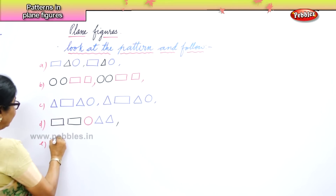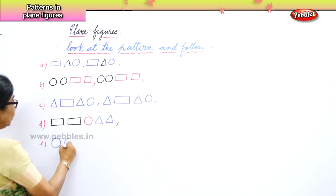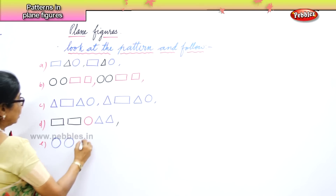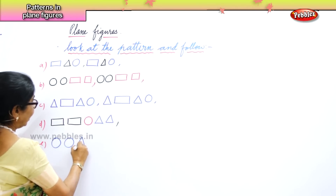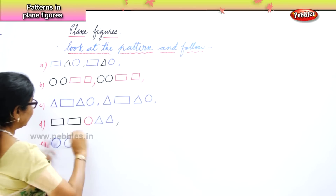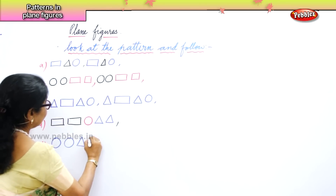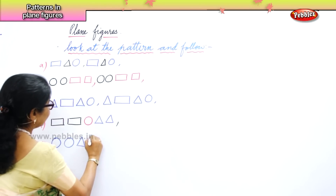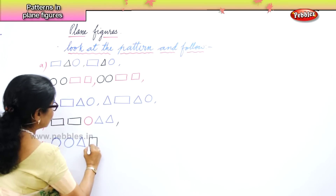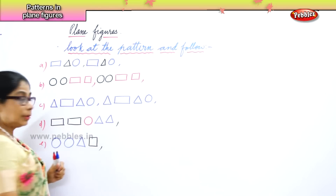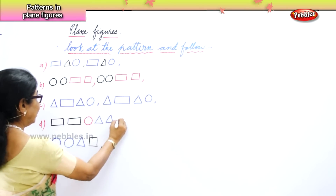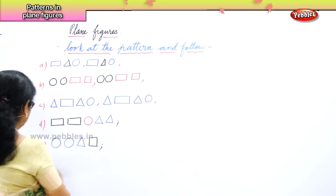Now I have here circle, circle, triangle, square — and then you follow the pattern. Next.